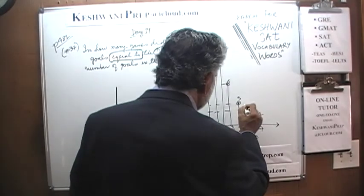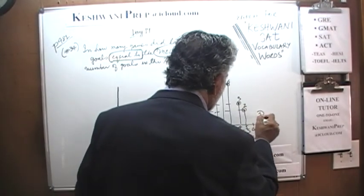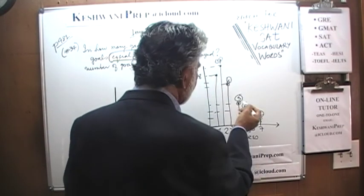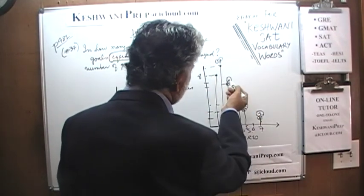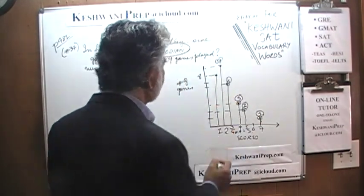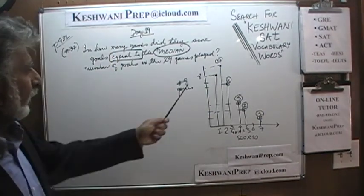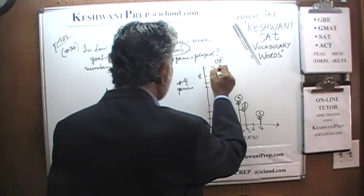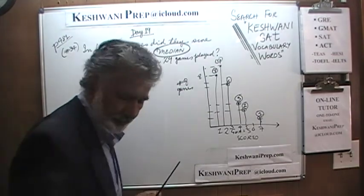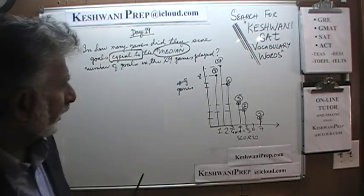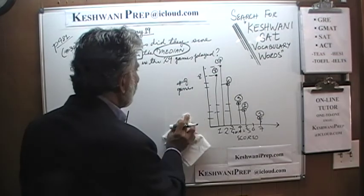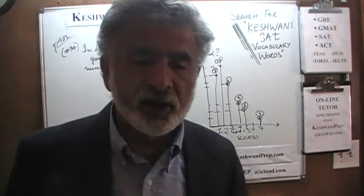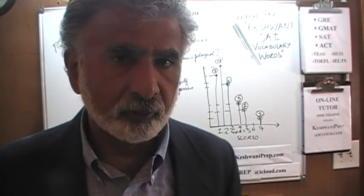If you add up all these numbers: three plus six is nine, plus nine is eighteen — wait, eight plus nine is seventeen, plus six is twenty-three, plus three is twenty-six, plus two is twenty-eight, plus one is twenty-nine games total. The question is: in how many games did they score a number equal to the median number of goals?